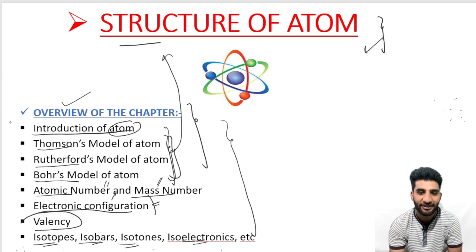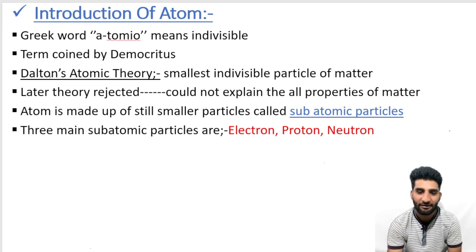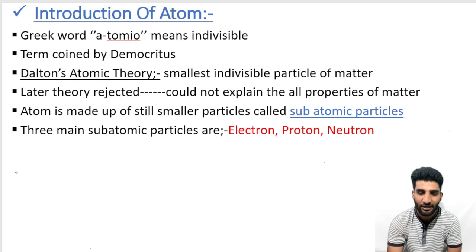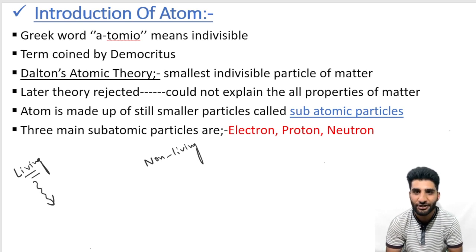Without further delay, I will start today's lecture with the first part — the introduction of the atom. To discuss the atom, let us first look at the bigger picture. The universe around us contains two types of things: living and non-living. A living thing is made up of small units, and we call these units as cells. For example, just as a house is made up of bricks, the cell is the structural unit of a living thing.